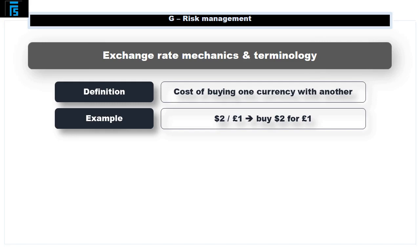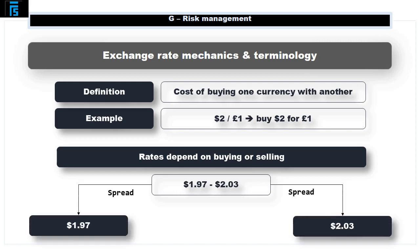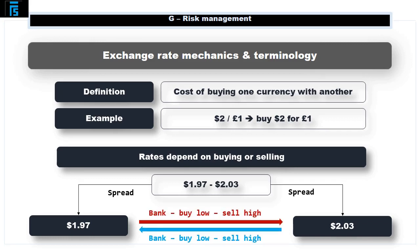An added complication is that banks or similar institutions offer different rates depending on whether you are buying or selling a currency. Accordingly, rather than seeing the rate expressed as $2, you may see it quoted as $1.97 to $2.03. The difference between the numbers is called the spread, and this is part of the profit that the bank makes on the arrangement. If you think of a bank as a trading organisation, they will buy at a low price and sell at a high price. Unfortunately, this means that businesses will buy at a high price and sell at a low price, the exact opposite of what they would like to do.